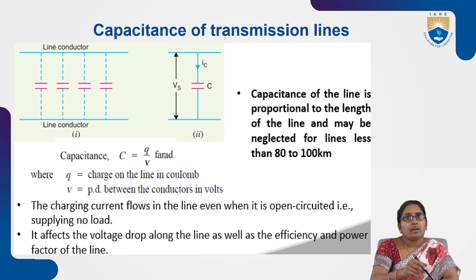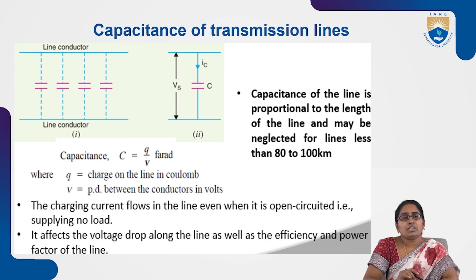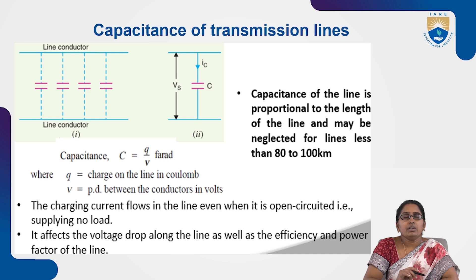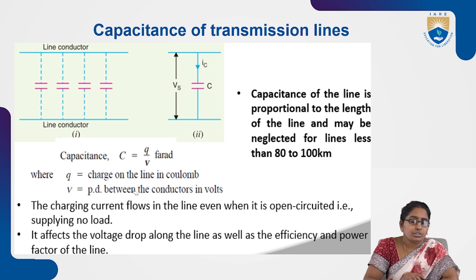Let us recollect the definition of capacitance. Capacitance is defined as the ratio of conductor charge to the potential difference between the conductors. Charge is denoted with small q, and voltage or potential difference is denoted with V.